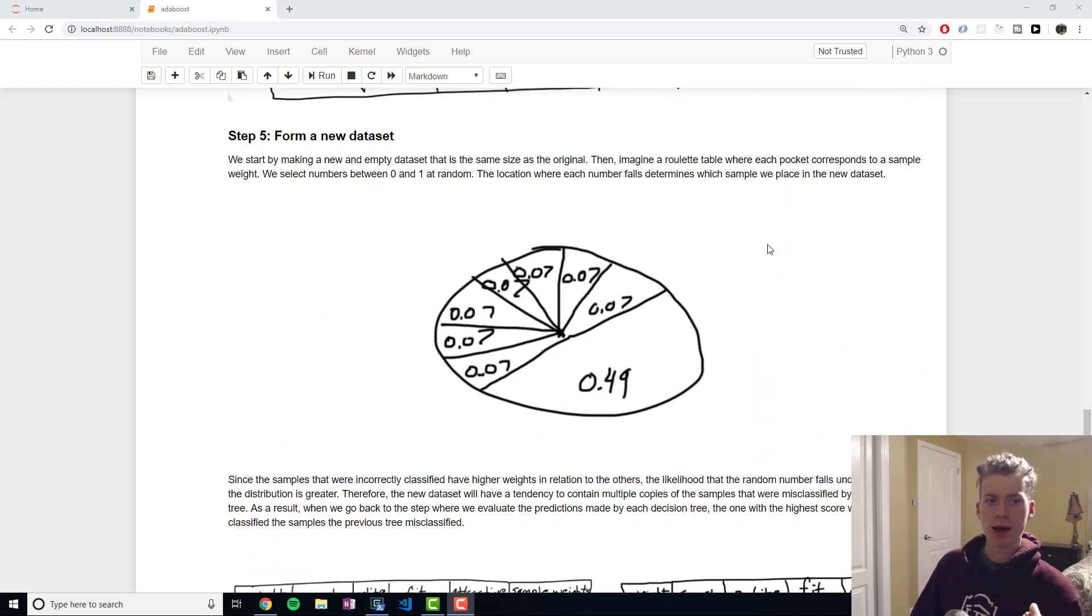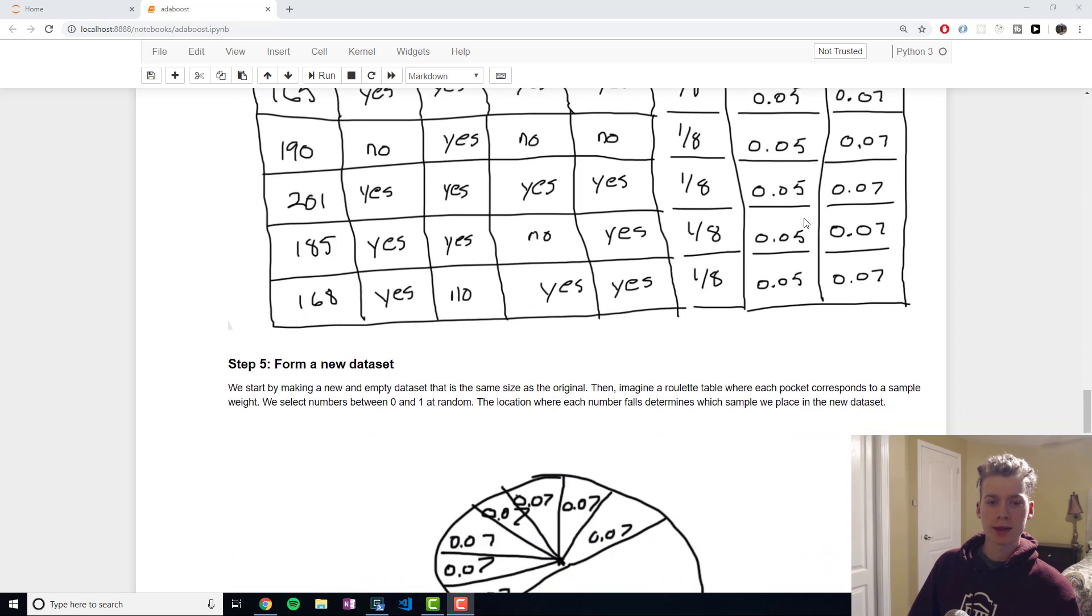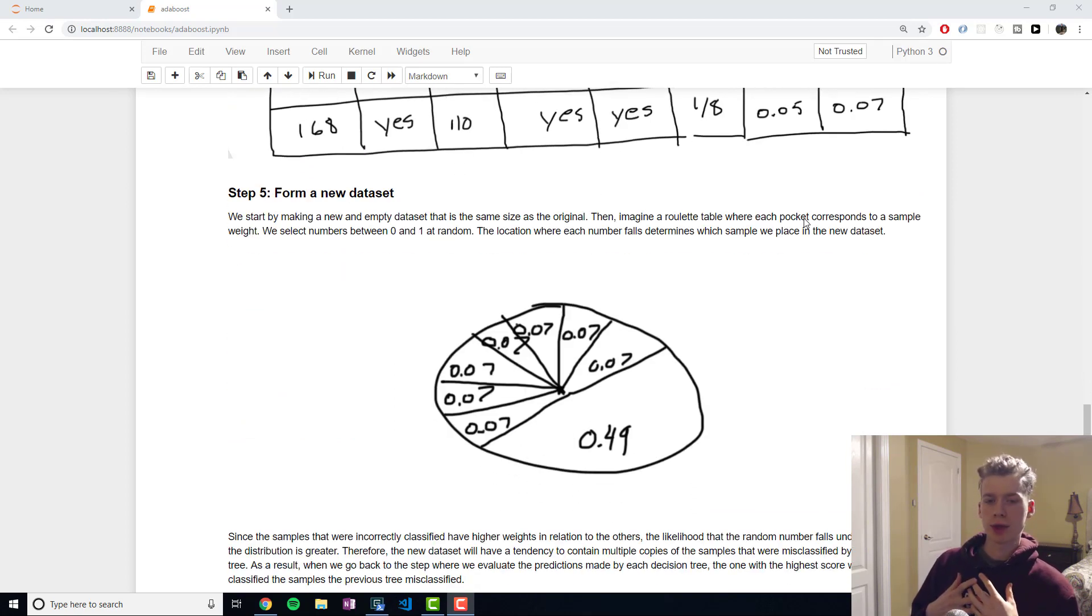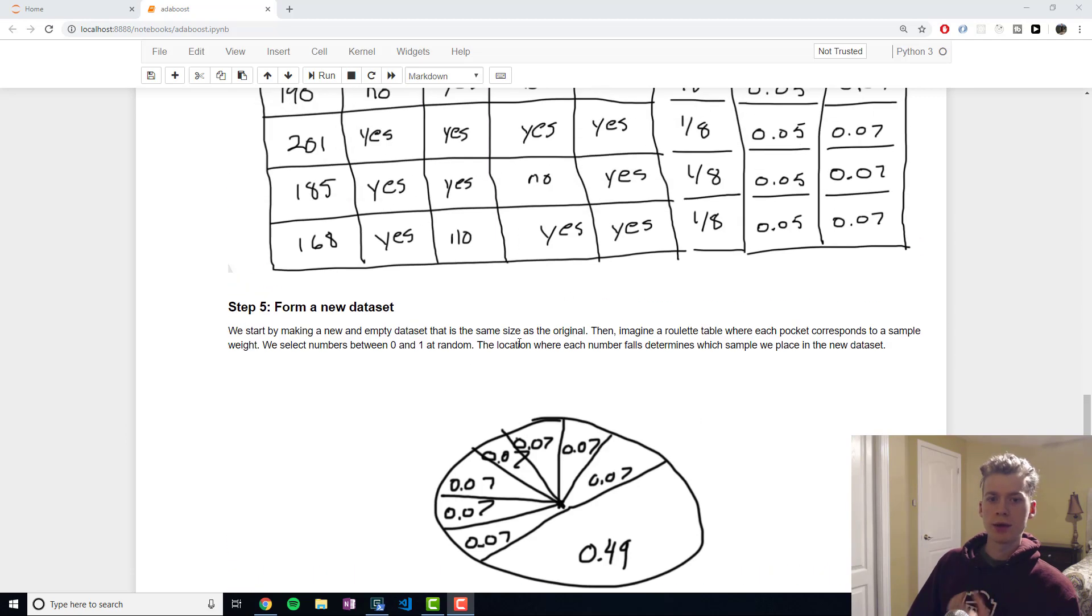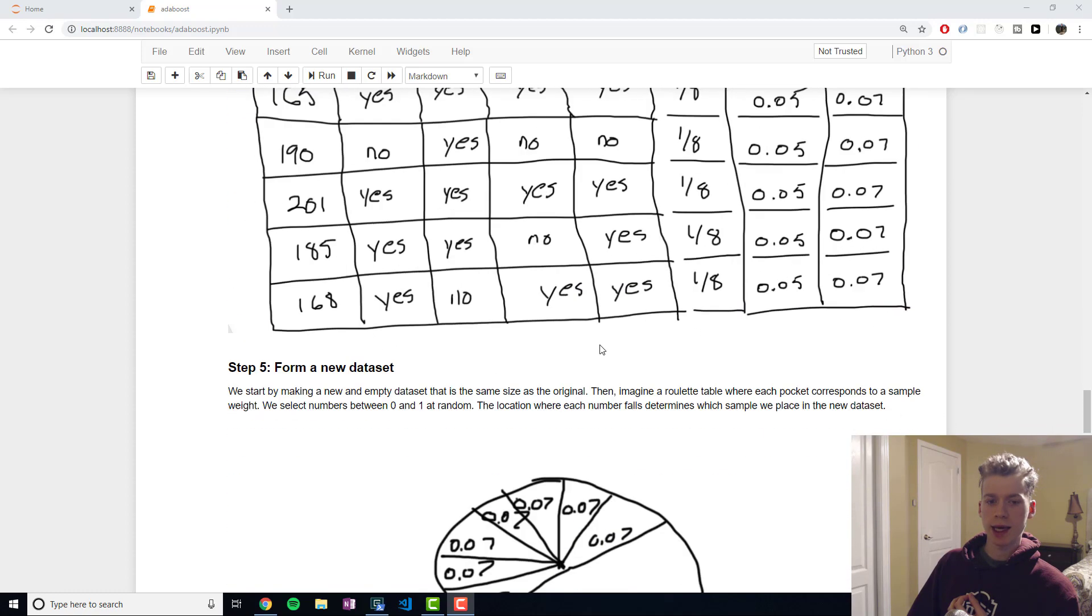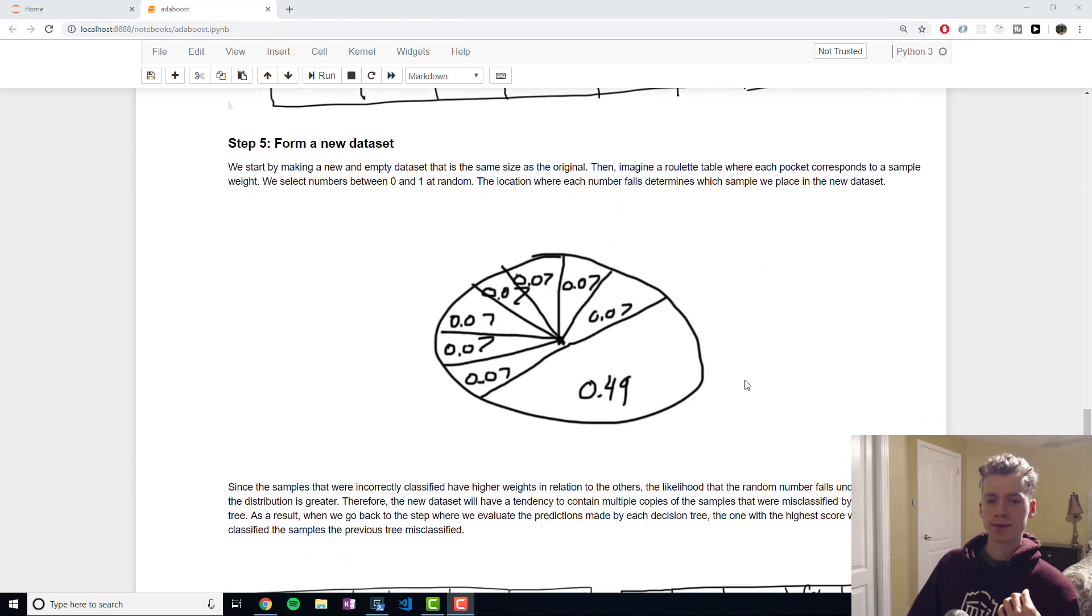The next step, step 5, is to form a new dataset using our new sample weights. I want you guys to imagine that we have a roulette table, and this roulette table will have slices or pockets corresponding to a width corresponding to the sample weight. The sample with the largest weight, which is 0.49 in this case, takes up almost half of the roulette table.